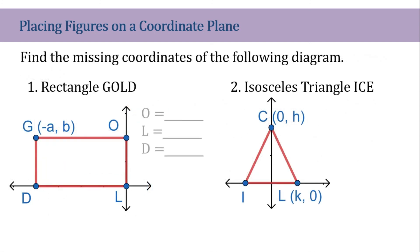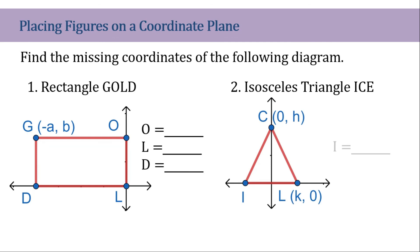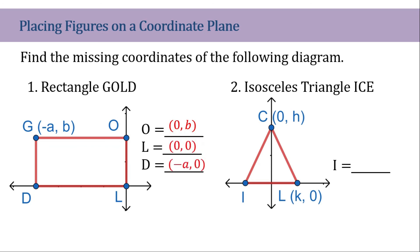For our last example: L should be (0, B), sharing the same Y axis as the origin. L will be the origin, and D will be (-A, 0), sharing the same X coordinate with one point and the same Y coordinate with another. This will be (-K, 0) — this is the center of the triangle. So (-K, 0) is the negative value of K.